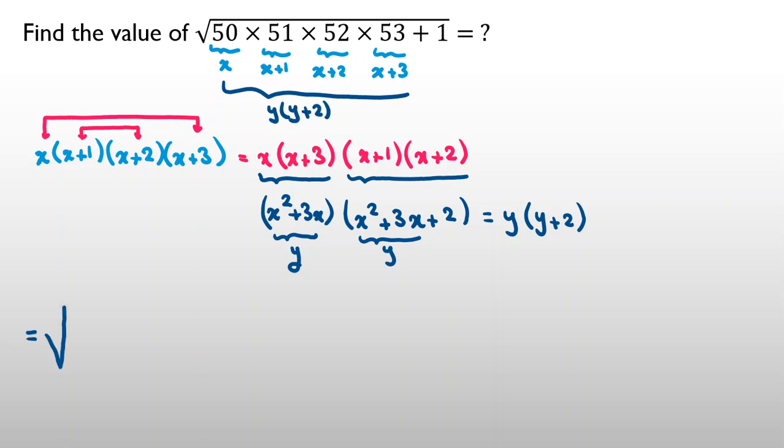If I want to calculate the whole term, it will be y times y plus 2 plus 1. That 1 is here. If I expand this, it will be y squared plus 2y plus 1.